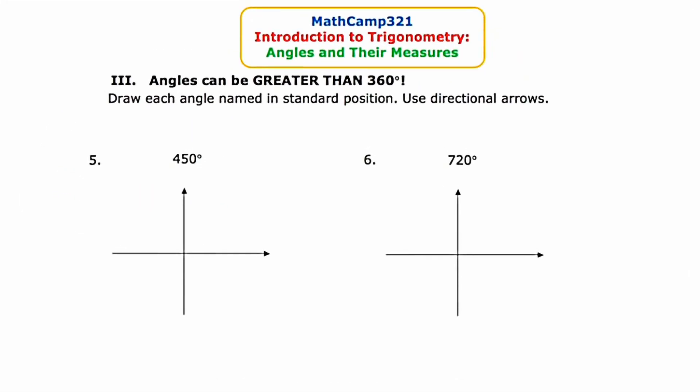Now we're on slide four and something really interesting happens. On this slide we're going to encounter angles that are larger than 360 degrees. In geometry the largest angle you considered was 360 degrees — a full circle. In trigonometry, you're allowed to have angles larger than 360, which is really surprising for a lot of students. The directions are the same: draw each angle in standard position and use directional arrows. The first angle is 450 degrees — let's draw the initial side along the positive x-axis.